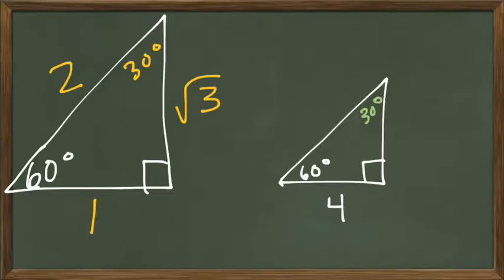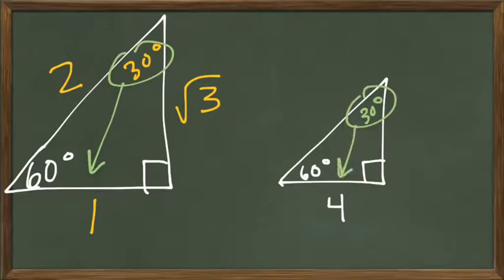And then I have to set up a scale factor. So hopefully I have a side that matches, first of all. Well, I do, because look, opposite of 30 is 1, and opposite of 30 is 4. So those are the matching sides of my right triangle. So when I set up my proportion, it's 1 over 4.